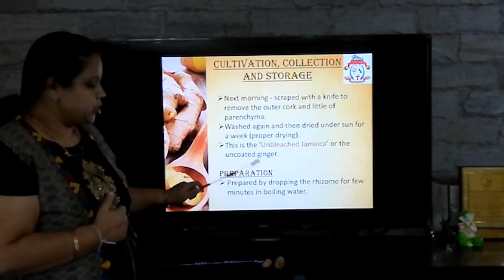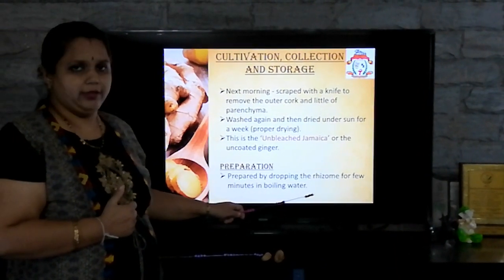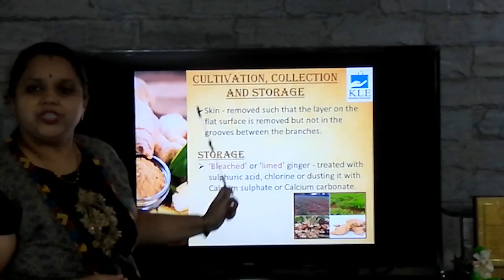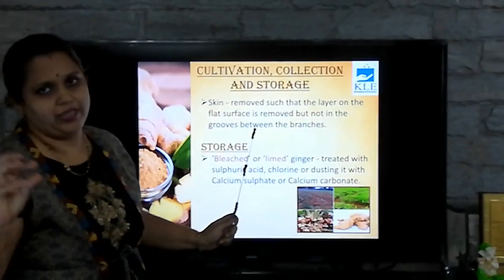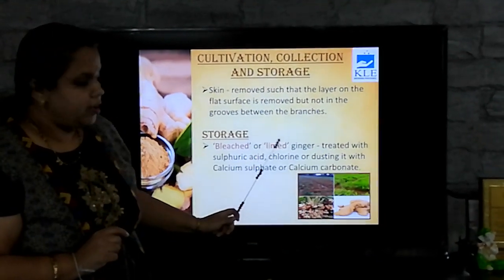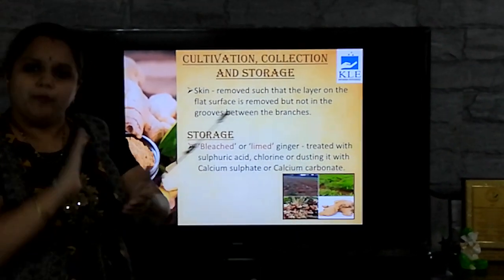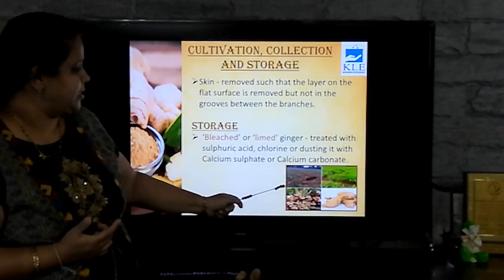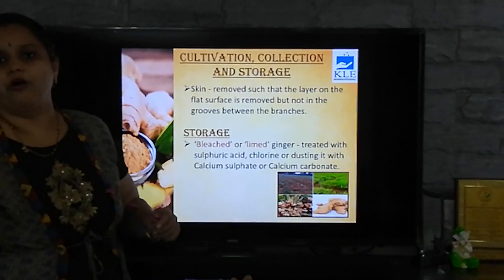To prolong its shelf life, ginger can also be processed so that its stability increases and it can be stored for a longer period of time. It is prepared by dropping the rhizome for a few minutes in boiling water. The skin of the rhizome is removed such that the layer on the flat surface comes out but not in the grooves between the branches. Then it is bleached — treated with sulfuric acid, chlorine, or dusted with calcium sulfate or calcium carbonate. This is called bleached or coated ginger and can be stored for a longer period of time.